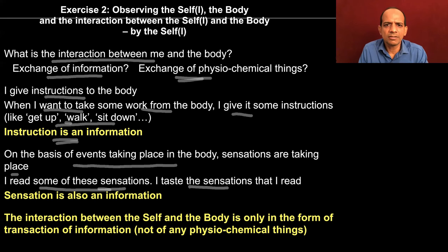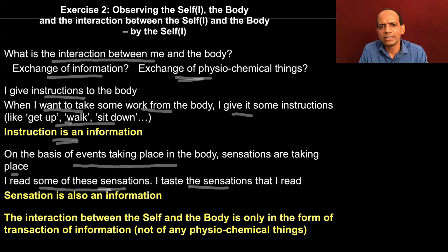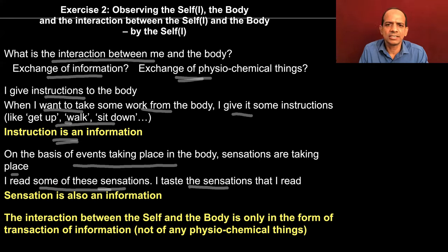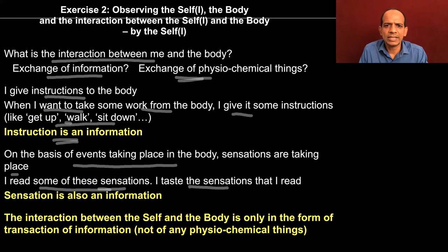There are sensations taking place in every part of the body — right from the tip of the toe to the head. When you consider a sensation important, you pay attention to it and you read that sensation. Presently you may feel like there is nothing happening in the toe, but when you start paying attention to the activities there, you will see that there are sensations and you are able to read them. You read only some of the sensations — not all. Several sensations are reaching you and you read those which you consider important. Then you taste the sensation — for example, if there is pain and you consider it important, you read it, you taste it, and if it is unpleasant you try to cure it.